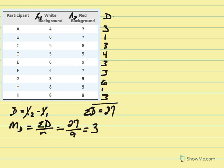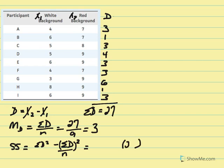Next we need to calculate the sum of squared deviations for our D values. The equation is the sum of D squared minus the sum of D squared over N. We know the sum of D is 27, squared over N which is 9. We still need to square all our D values to get the sum of D squared: 3²=9, 1²=1, 9, 16, 9, 9, 36, 1, and 9.